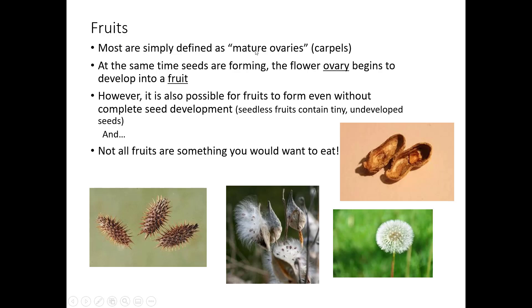Fruits are the ovaries — the carpels surrounding the ovules. When the seeds are forming from the ovules, the ovary forms into the fruit. Not all fruits are things you want to eat. The shell of a peanut, little burr structures, the cottony white stuff of milkweed, and the fluffy part of a dandelion are all fruits — fruit in the scientific sense, not in the everyday sense.